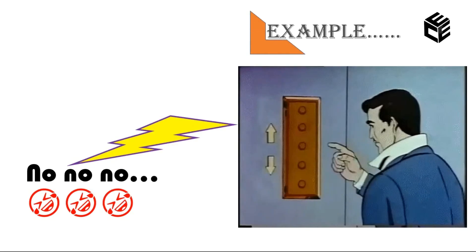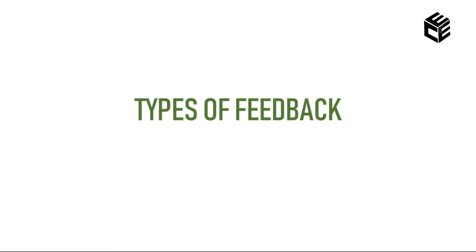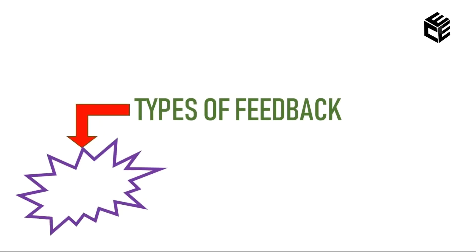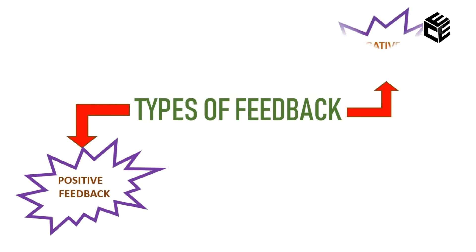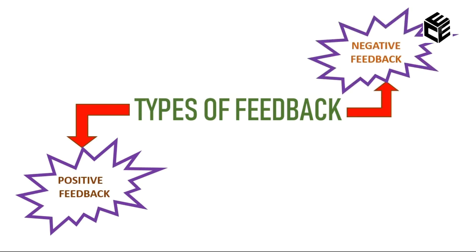Now you understand what is a feedback system. The feedback system can be classified into two types: positive feedback and negative feedback.